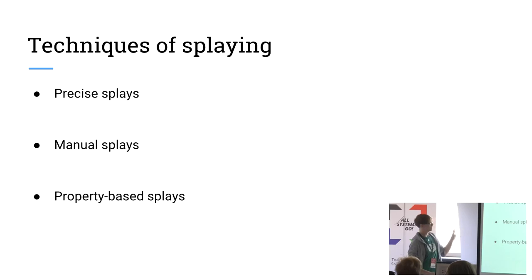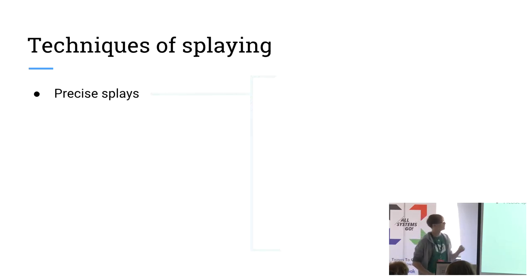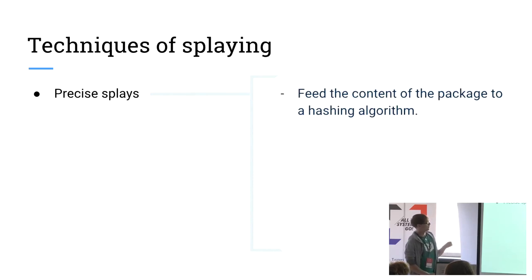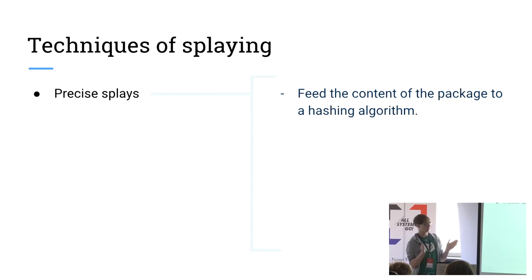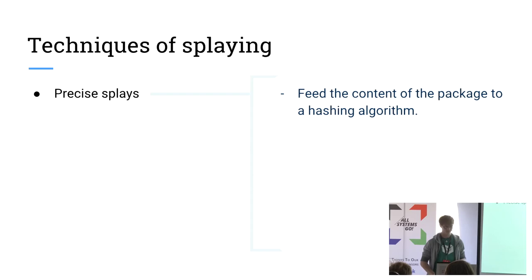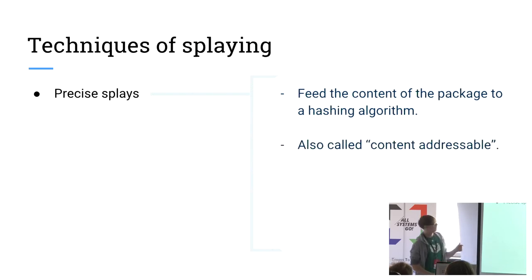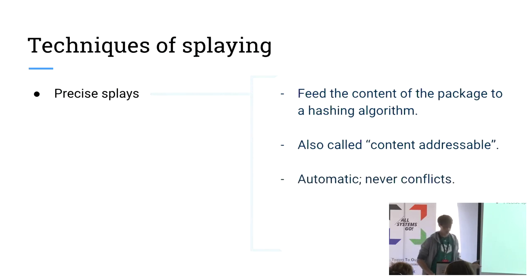These are the three major different ways I can imagine you would ever splay out libraries. The first one is what I'm going to call a precise splay. This is simply when I have some library and I want to know what path I'm going to put it in: I hash all of the contents of the library and put it in a folder with the name of the hash. I'll probably use a cryptographic hash for this. This is probably sounding pretty familiar — we also call this content addressable.